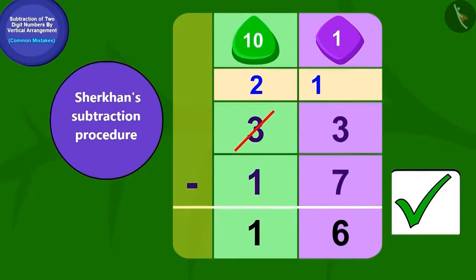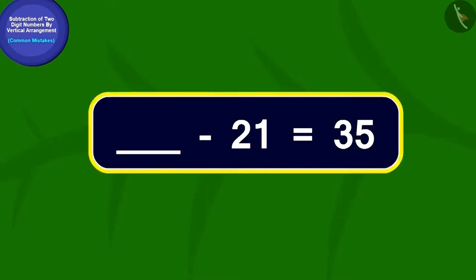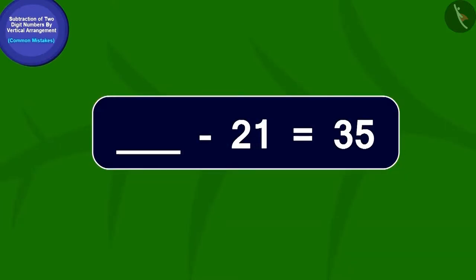Now, Sher Khan is ahead of Chanda by one point. Let's see what is the last question of the competition. Fill in the numbers in the blank space. You have thirty seconds for this.